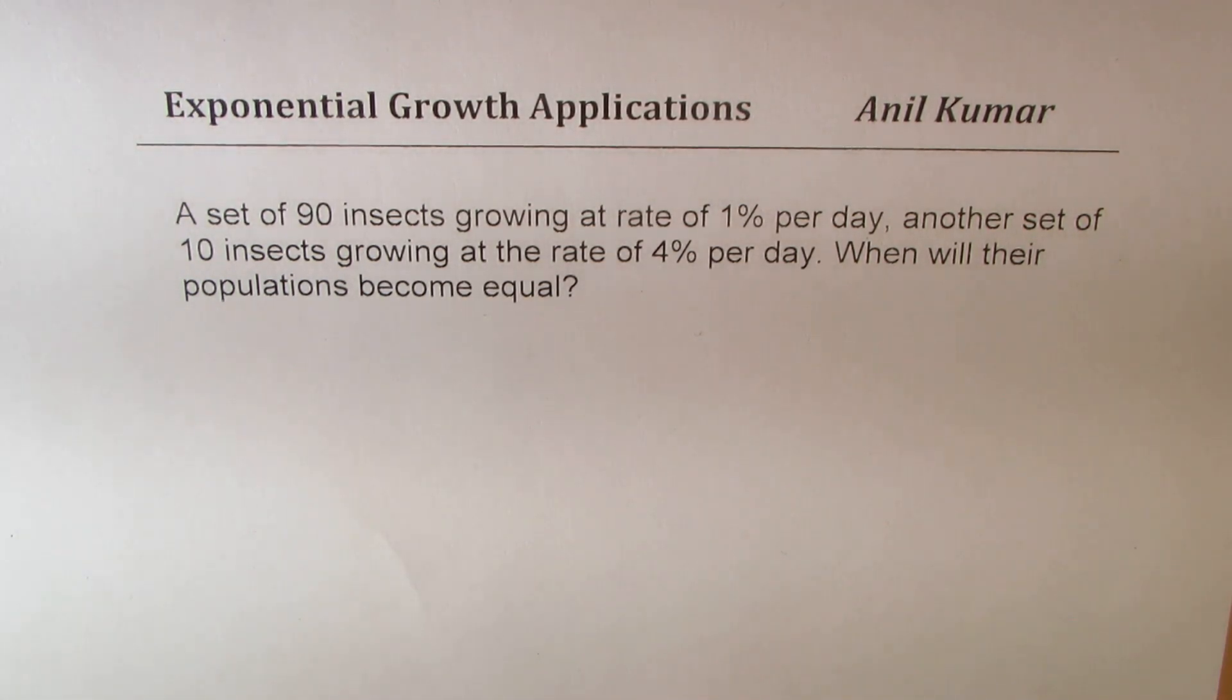The question here is: a set of 90 insects growing at a rate of 1% per day, another set of 10 insects growing at a rate of 4% per day, when will their population become equal?